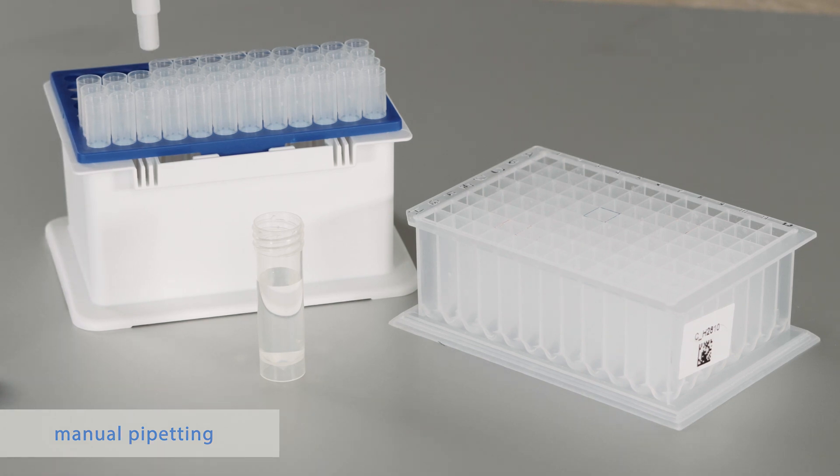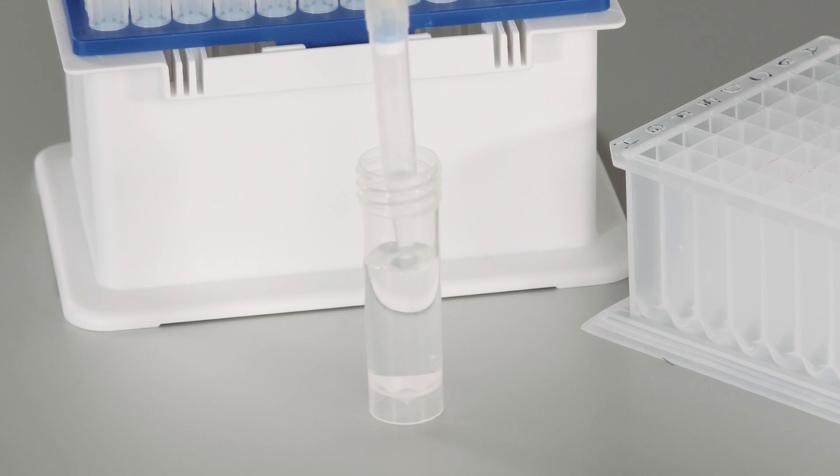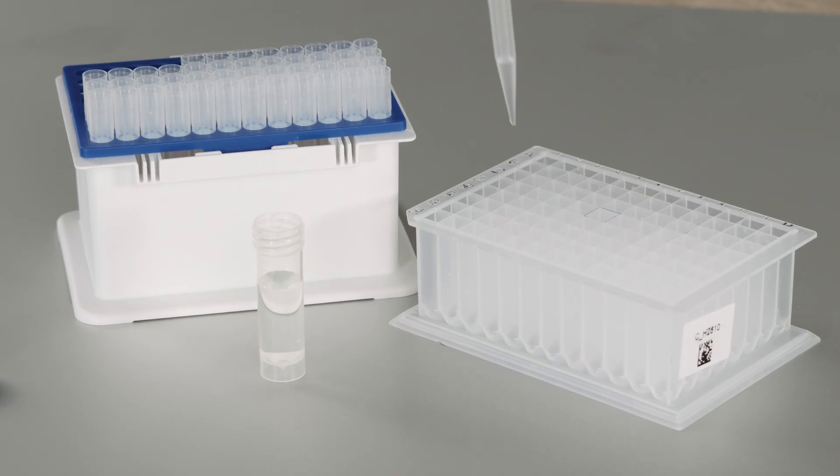For this, we have a so-called deep well plate. Those plates have 96 small boxes inside, and here I have to put on a tip onto the pipette, open the sample, take out the liquid, and pipette it into this plate.